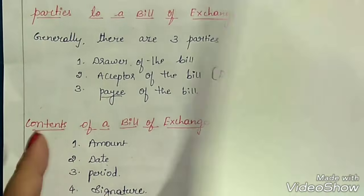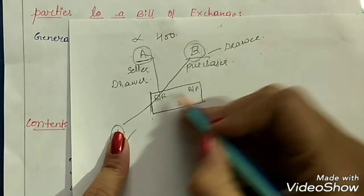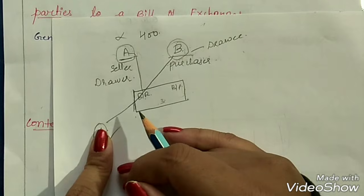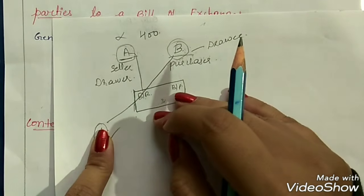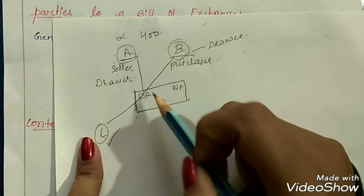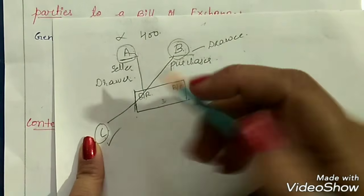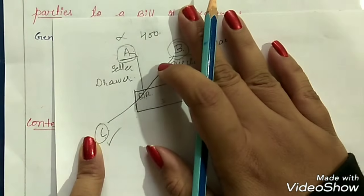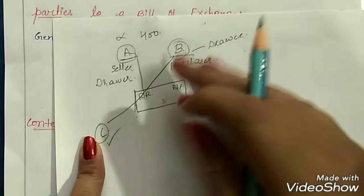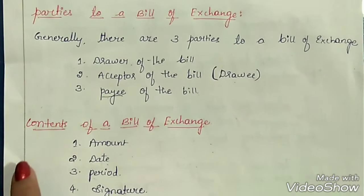So in some cases the payee will be different, but in most cases the drawer will be the payee. One important thing to remember: when A draws the bill on B, B reads it, gives his consent by making his signature, and then returns the bill to A. B cannot keep the bill — the drawer keeps the bill. When the maturity date arrives, A can contact B and ask for payment by showing the bill of exchange.